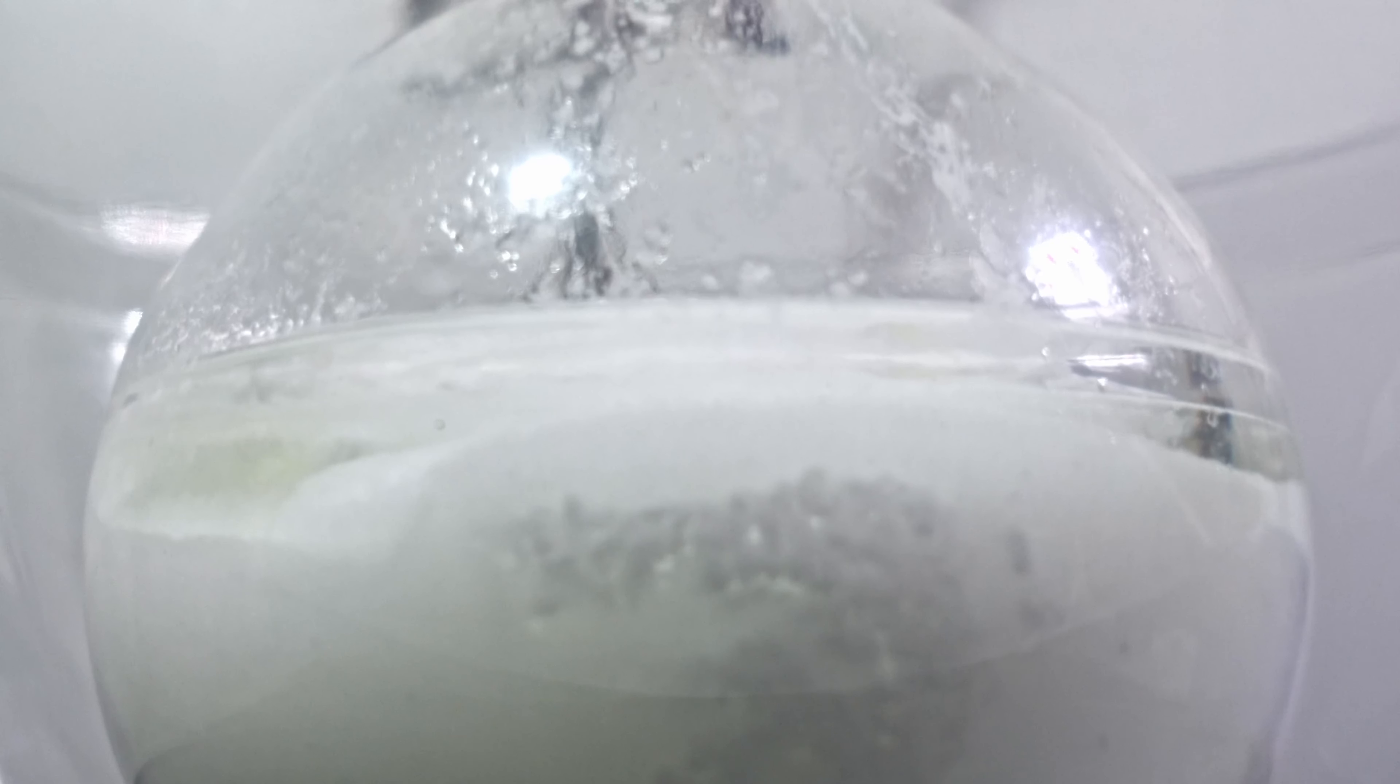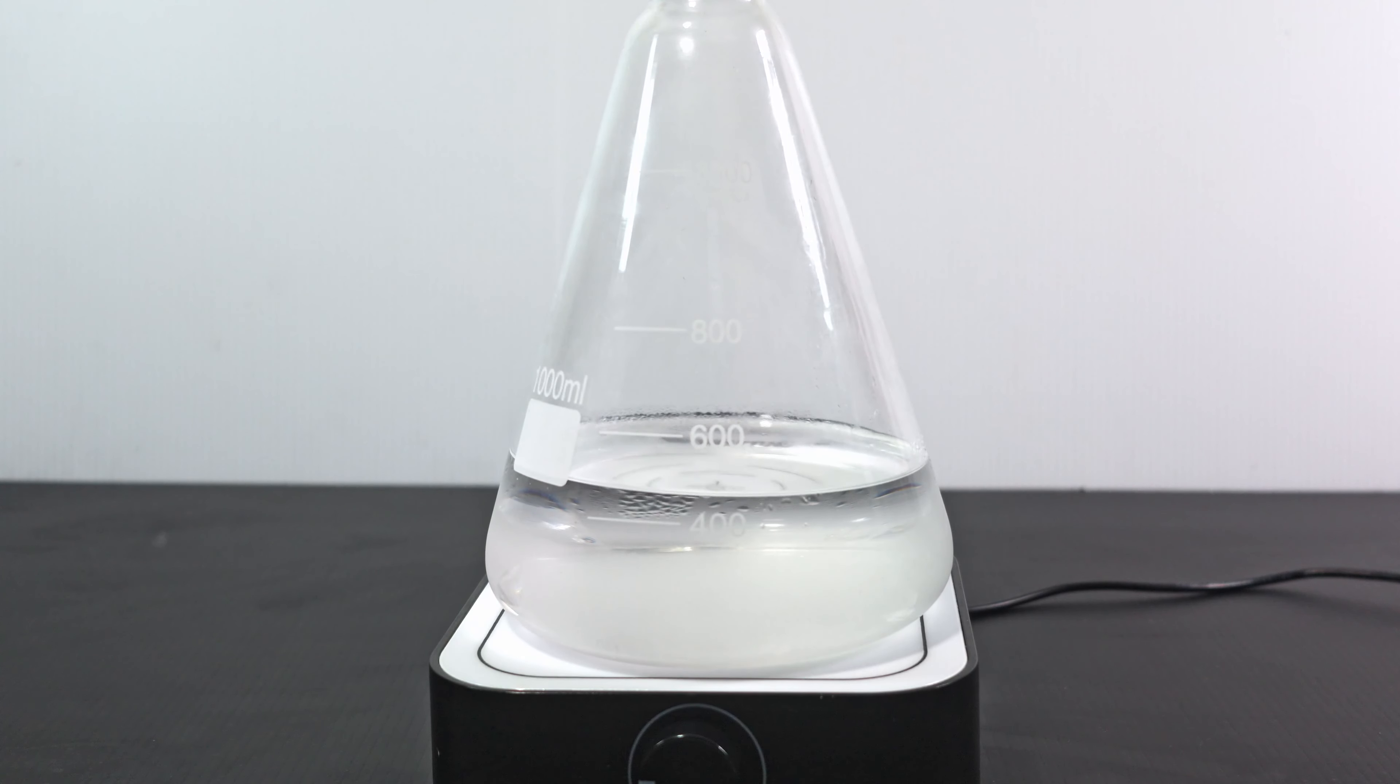And what do you know? Some tert-butyl chloride does come out of solution. In all, I got a little over 400 ml of crude tert-butyl chloride.